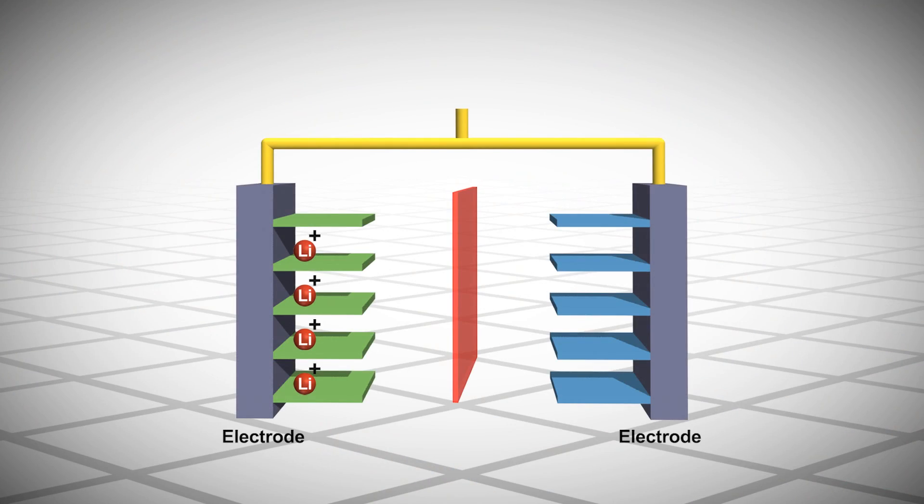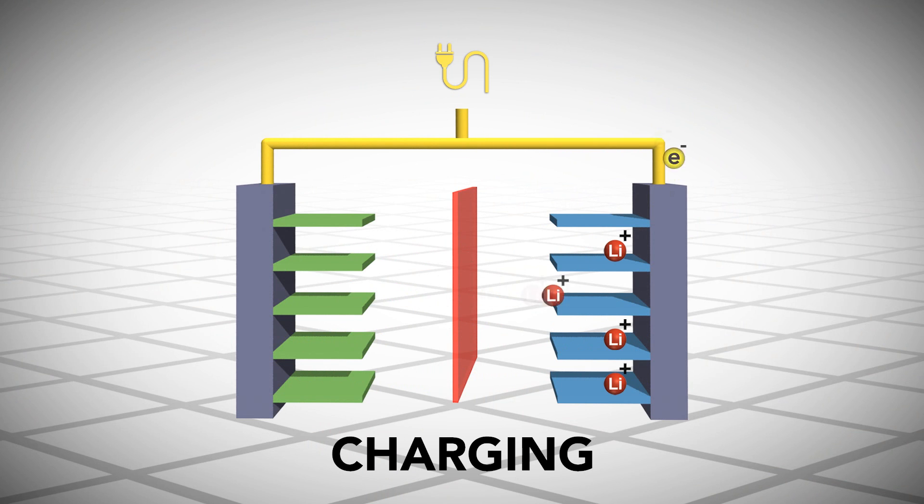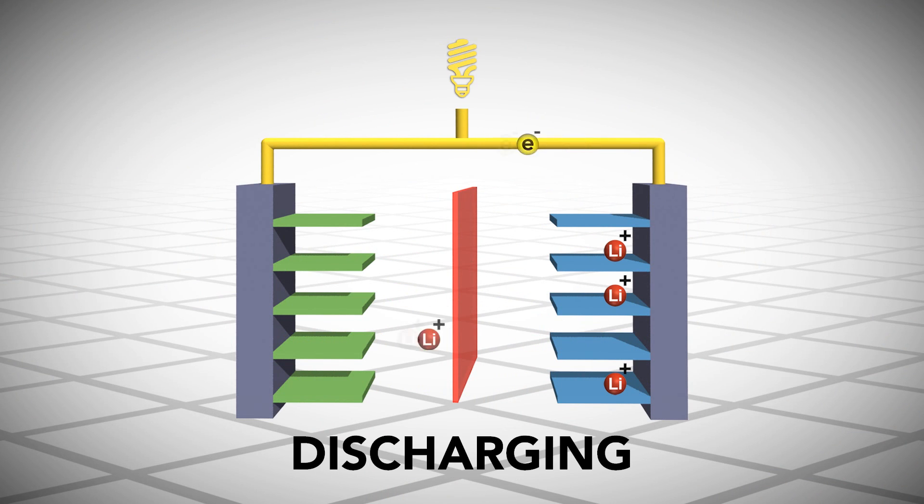A battery like this sends ions from positive to negative electrodes during charging and back again when the electricity is used, a cycle that ideally can repeat forever.